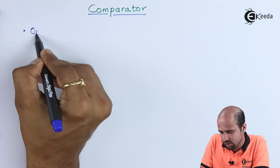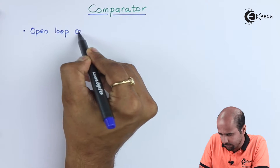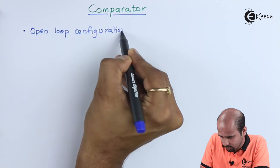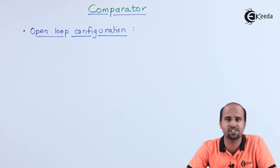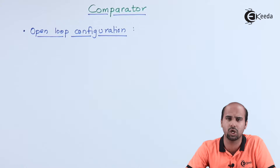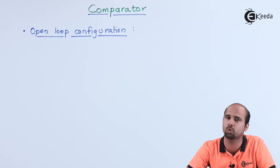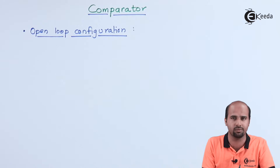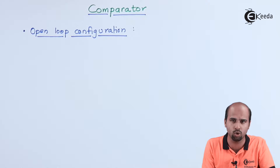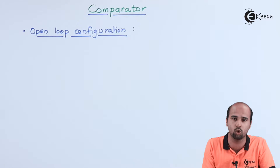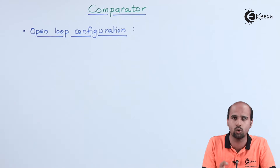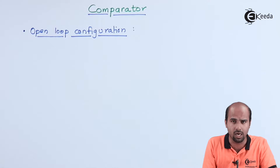Let us understand what Open Loop Configuration means. You must have studied the EIC subject or control systems, where you have heard about Open Loop Configuration and Closed Loop Configuration. For example, if I am balancing a stick and I am not looking at the stick, it may happen that I lose control of it. This is how Open Loop Configuration works — there is no loop formation, no feedback.